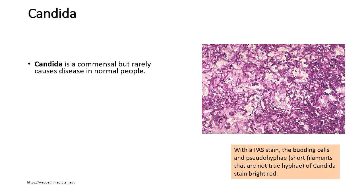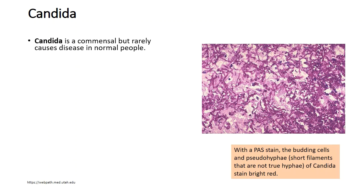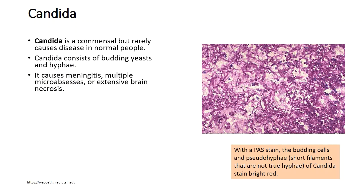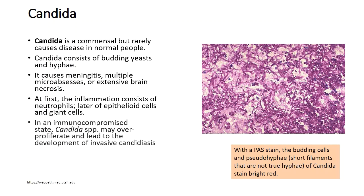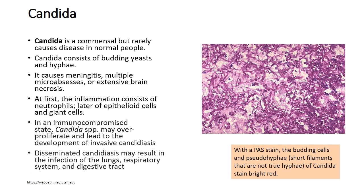Coming to Candida: Candida is a commensal but rarely affects individuals. It can occur as budding yeasts and hyphae, causing meningitis, multiple micro-abscesses, and extensive brain necrosis. At first the inflammation consists of neutrophils, later consisting of epithelioid histiocytes and giant cells. In an immunocompromised state, Candida species may over-proliferate and lead to invasive candidiasis. Disseminated candidiasis may result from infection of the lung, respiratory system, or digestive tract. The PAS stain shows budding yeasts and pseudohyphae.